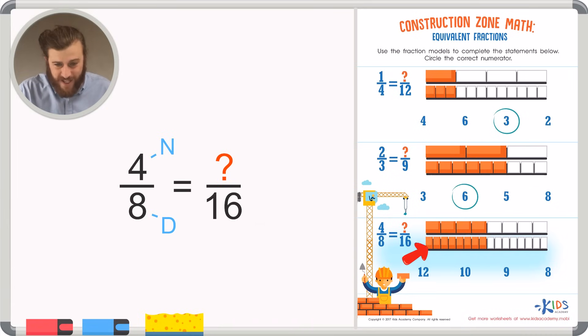In our second fraction, there are sixteen pieces in total. But what's the numerator? Let's count the boxes to find out how many sixteenths need to be shaded in to make an equivalent fraction to four-eighths. Well, there's one, two, three, four, five, six, seven, eight pieces shaded in.